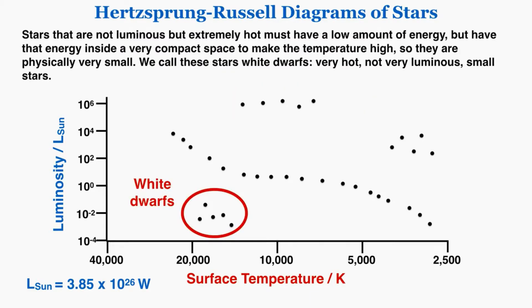Stars that are not too luminous but are extremely hot must have a low amount of energy but have that energy inside a very compact space to make the temperature high, so they're physically very small. We call these stars white dwarfs—they're very hot, not very luminous, and they're small stars.